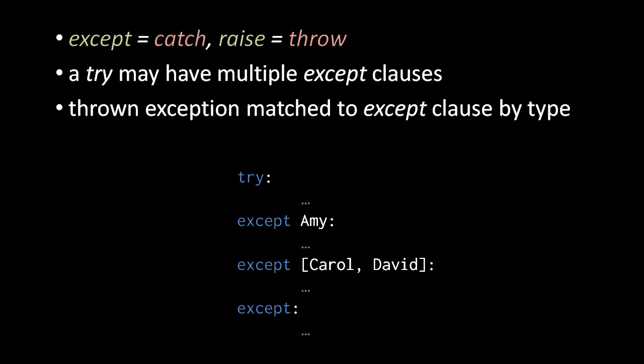The big difference in Python is that a try may have multiple except clauses, and when an exception is thrown in the try, the except clause which executes is the first one which lists a class of which the exception object itself is an instance. In the example, we have a try with three except clauses. The first except clause lists a class Amy, the second has two classes Carol and David, and the third except clause doesn't list any classes, which means that it will match any exception.